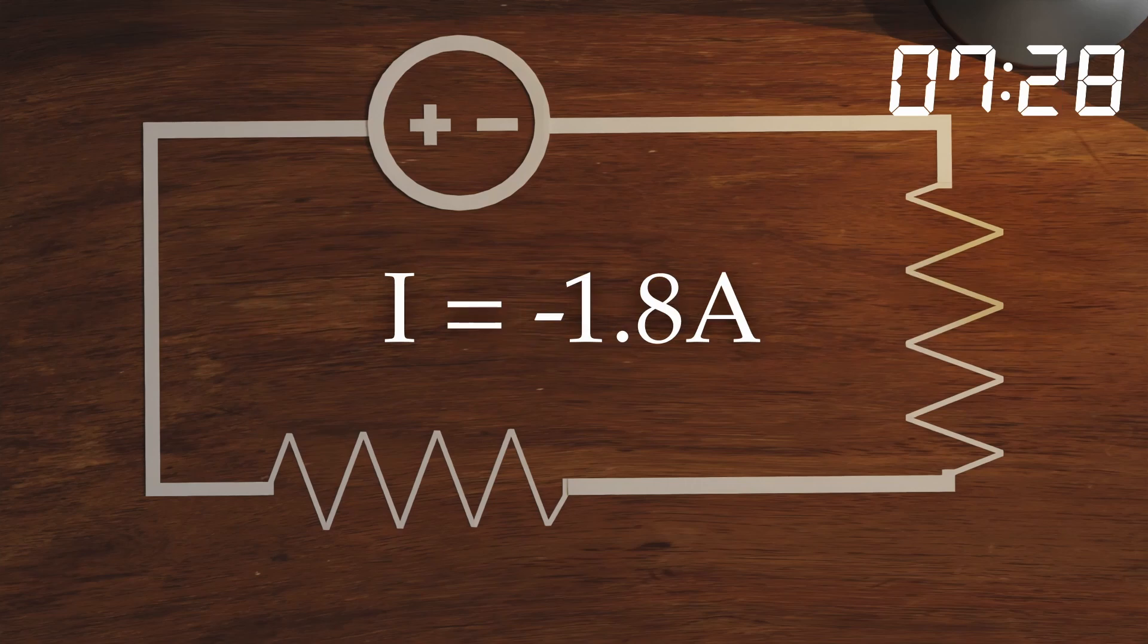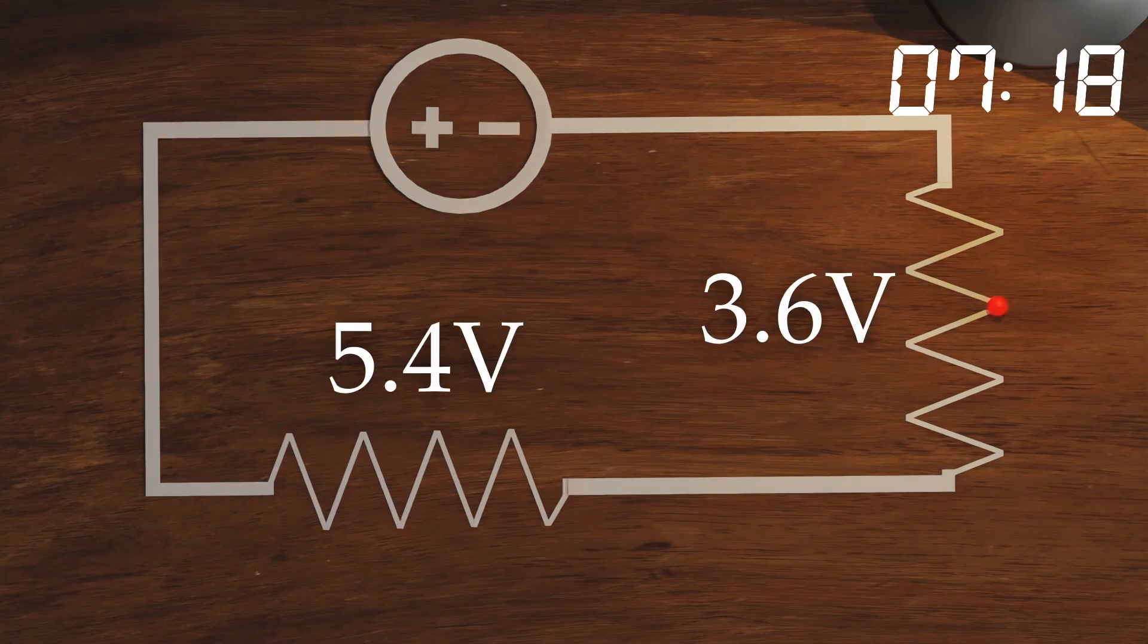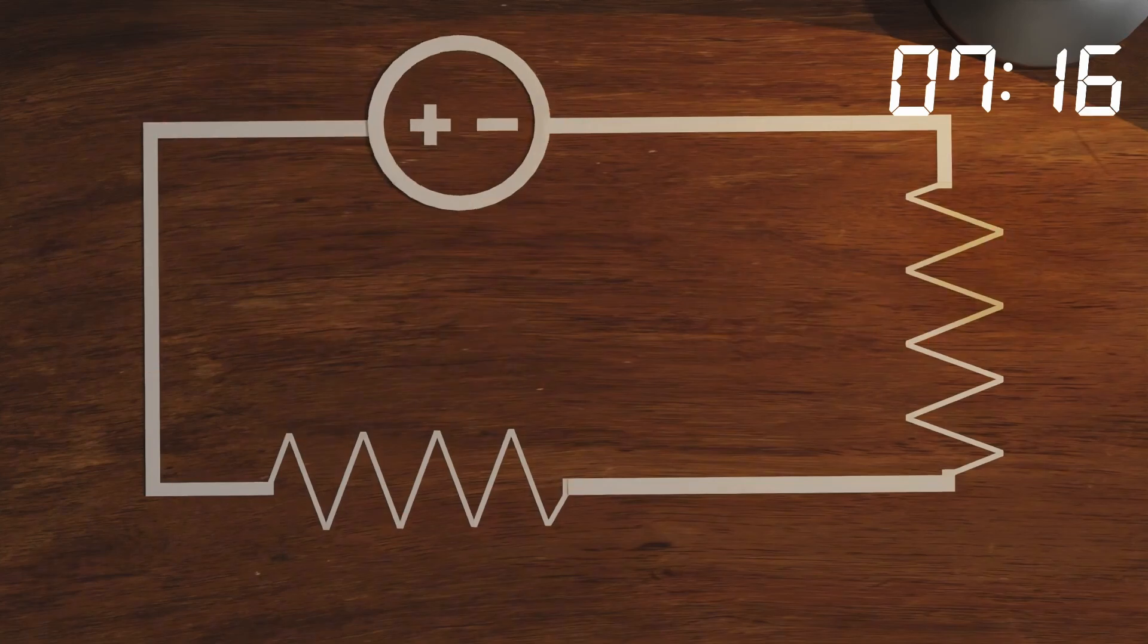The minus sign tells us that we're wrong about guessing the current clockwise, so it goes counterclockwise. The voltages in the resistors are then 4 volts and 6 volts.